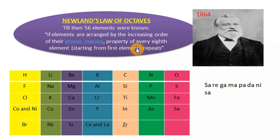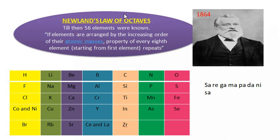We are going to study about Newland's Law of Octaves. In 1864, Newland gave his law and arranged the then-known elements in the order of increasing atomic mass — the same basis used by Döbereiner. Until then, 56 elements were known. He found that every eighth element has similar properties to the first element, and based on this observation he gave his law the name 'Octave'.